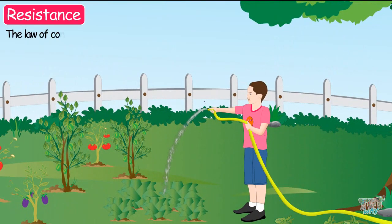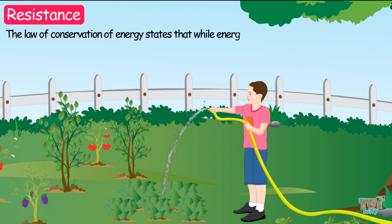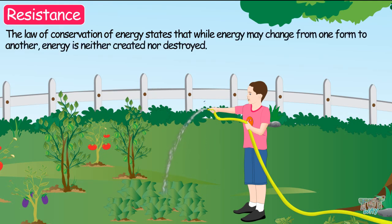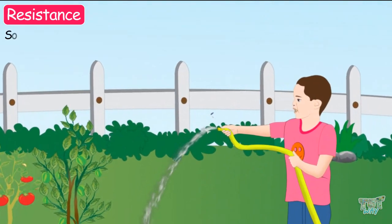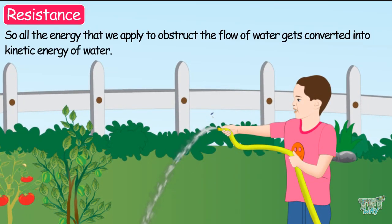The law of conservation of energy states that while energy may change from one form to another, energy is neither created nor destroyed. So all the energy that we apply to obstruct the flow of water gets converted into kinetic energy of water.